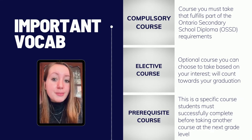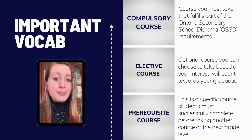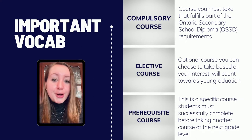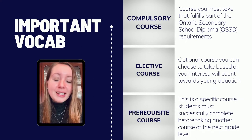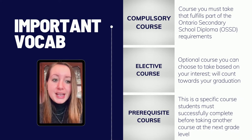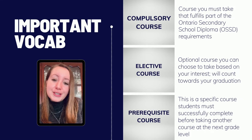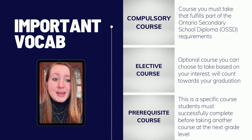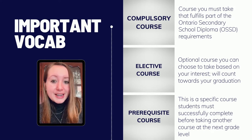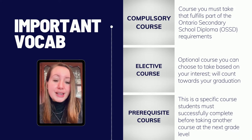An example of a compulsory course would be English — this is compulsory for all grades from 9 to 12. Elective courses, on the other hand, are classes that are optional. These are the classes that students can choose during their course selection process based on their interests, and each elective course will count towards meeting their 30-credit graduation requirement.